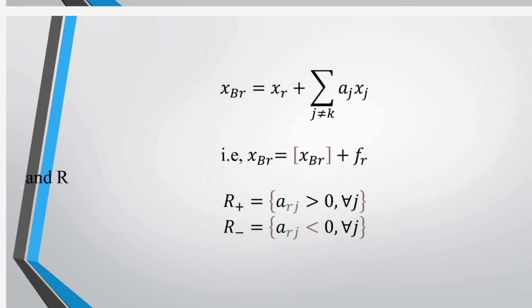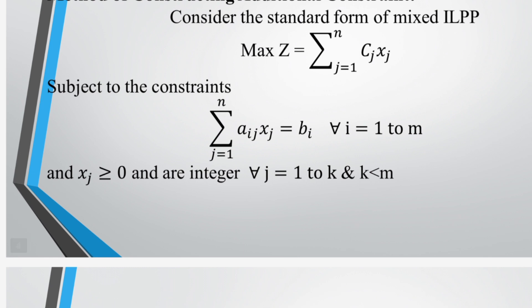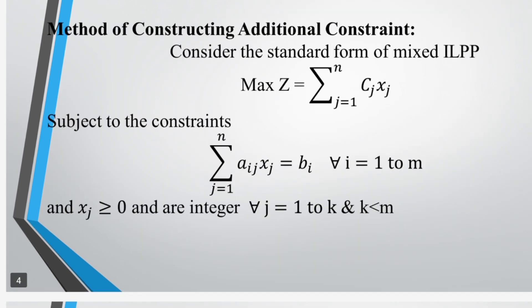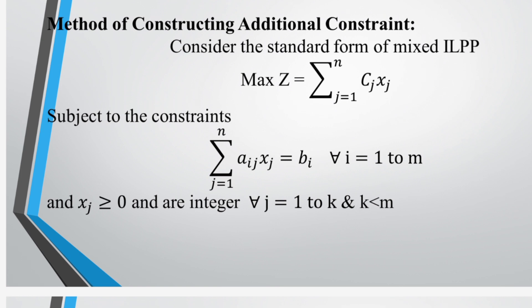Now, Xbr equal to Xr plus summation j not equal to K of Aij·Xj, subject to the constraints for all j equal to 1 to K and K less than M. Formulate the standard integer linear programming problem; if there are any non-integer coefficients in the constraints, convert them into integers and solve by using the simplex method by ignoring the integer requirement of the variables. Now check the optimal solution: if the restricted basic variables have integer solutions, then the current solution is the optimal solution. Otherwise, we go to additional constraints by using Gomory's Mixed Integer Cutting Plane method.